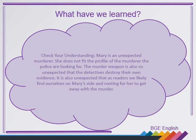What have we learned in this lesson? Let's check your understanding. Mary herself is an unexpected murderer — she does not fit the profile of the murderer the police are looking for. The murder weapon is also so unexpected that the detectives destroy their own evidence. And it's also unexpected that, as readers, we likely find ourselves on Mary's side and rooting for her to get away with the murder.